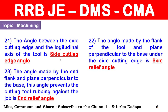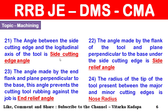The angle made by the end flank and a plane perpendicular to the base — this angle prevents the cutting tool from rubbing against the jaw — is the end relief angle. The radius of the tip of the tool present between the major and minor cutting edges is the nose radius. Note: among all other angles, the nose radius is measured in millimeters only.